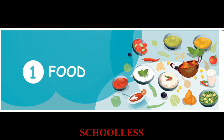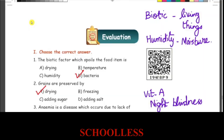It needs to be asked questions and answers. Choose the correct answer. The biotic factor which spoils the food item is a biotic factor — a living organism. Biotic is something related to life, so it seems to be a biotic factor.